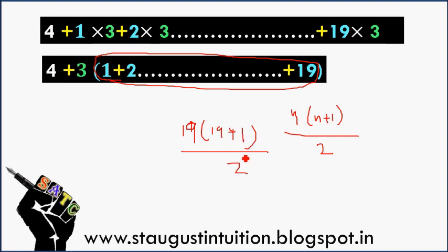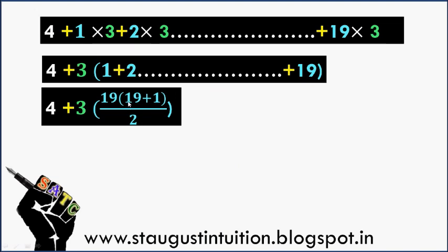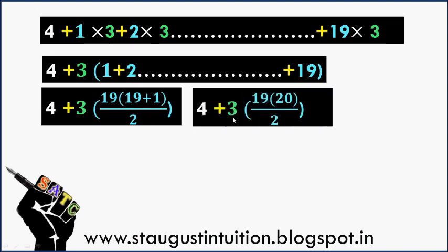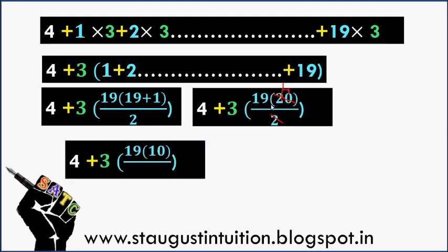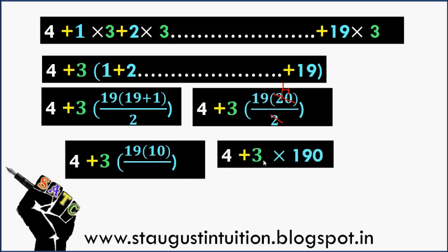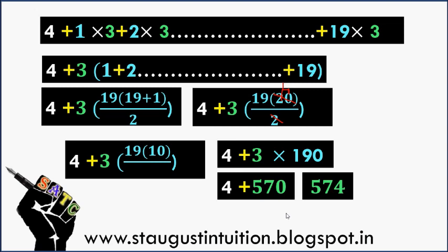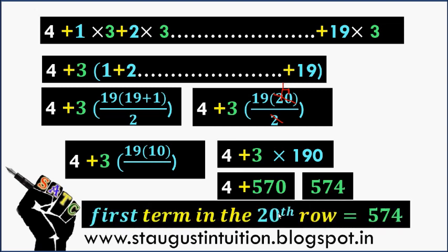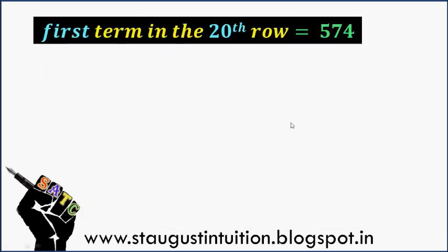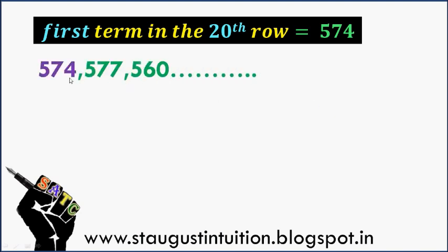If we take this, it is 10. So 11 into 12 plus 1 divided by 2. We will get the answer: 574. So the first term in the 20th row is 574.